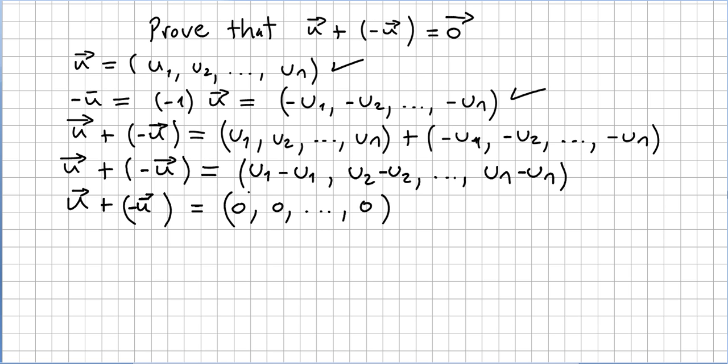But u1 minus u1 is 0, component 0, u2 minus u2, that's 0, and u n minus u n is 0.